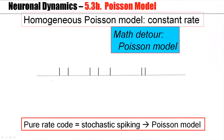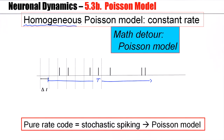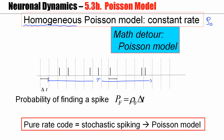So what is a Poisson model? Suppose I have observed a spike train. We assume that during the whole period, big T, the neuron fires at a constant rate. This is called a homogeneous Poisson process. Now we discretize time, using short time bins delta t. If a neuron fires at a constant rate, which I call rho 0, then the probability of finding a spike in such a small interval is just rho 0 times delta t.